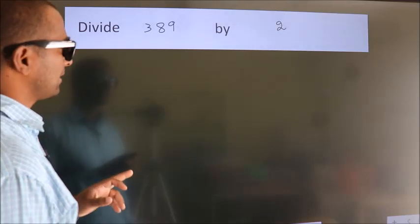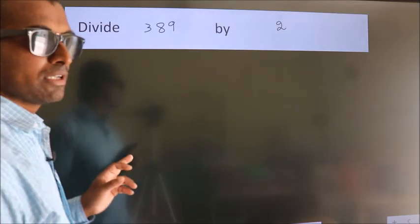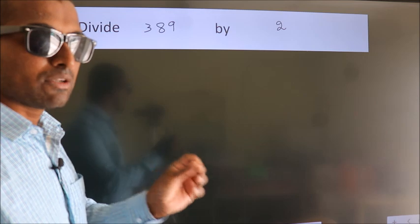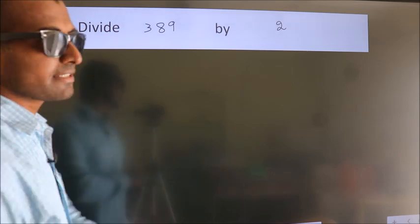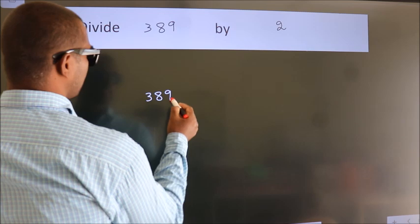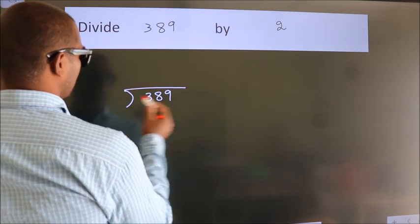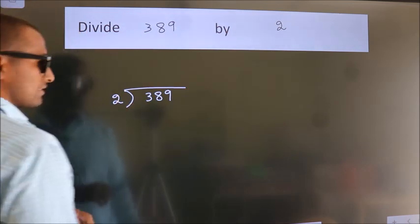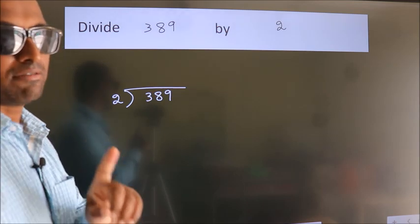Divide 389 by 2. To do this division, we should frame it in this way. 389 here, 2 here. This is your step 1.